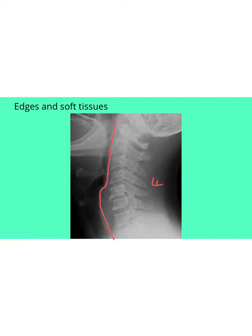In conclusion, what do we see on this x-ray? We see a unilateral perched facet subluxation at the level of C5 and C6. You can see that this facet is perched on top of the one below it, and any further anterior movement of C5 would cause it to dislocate completely.